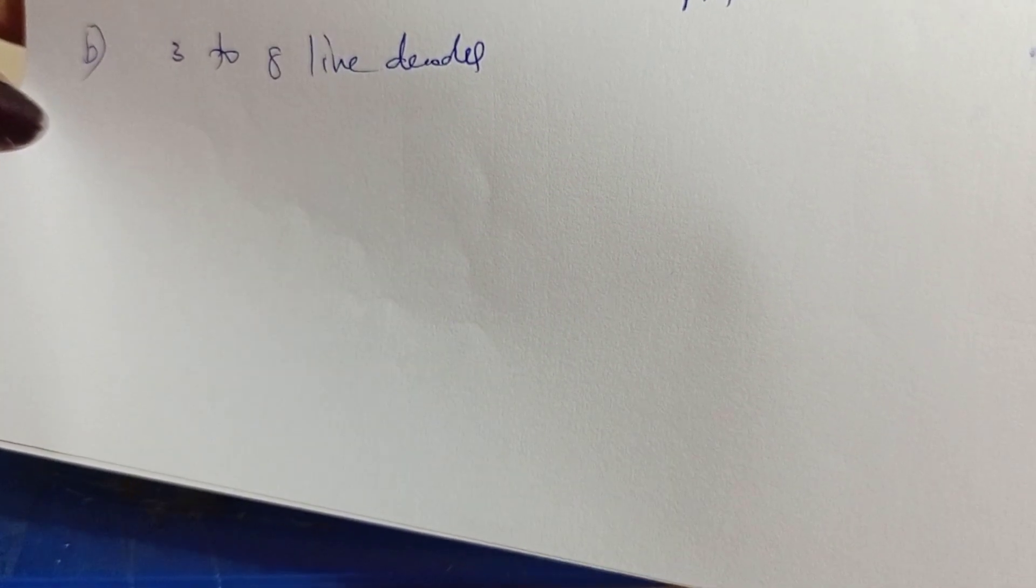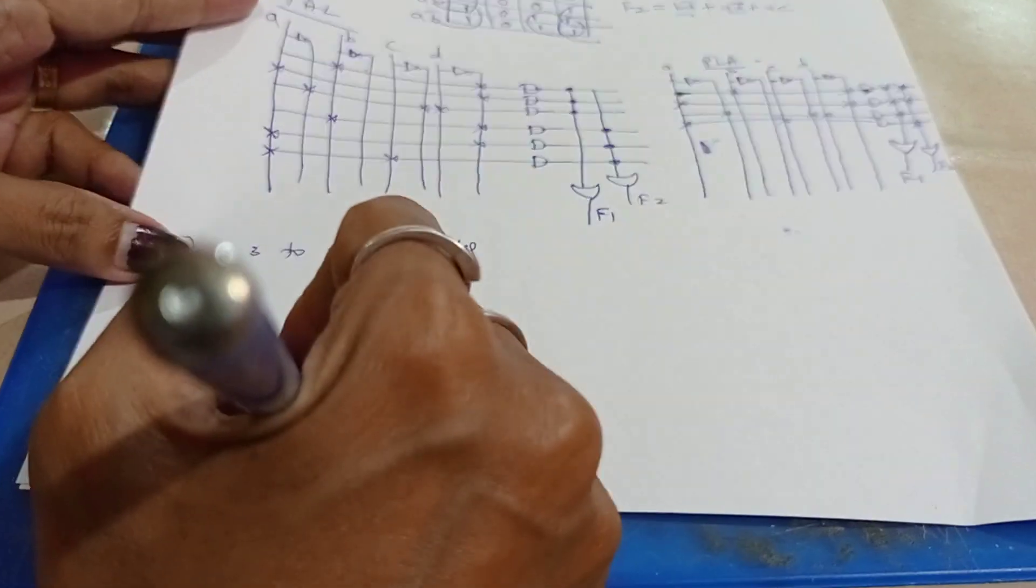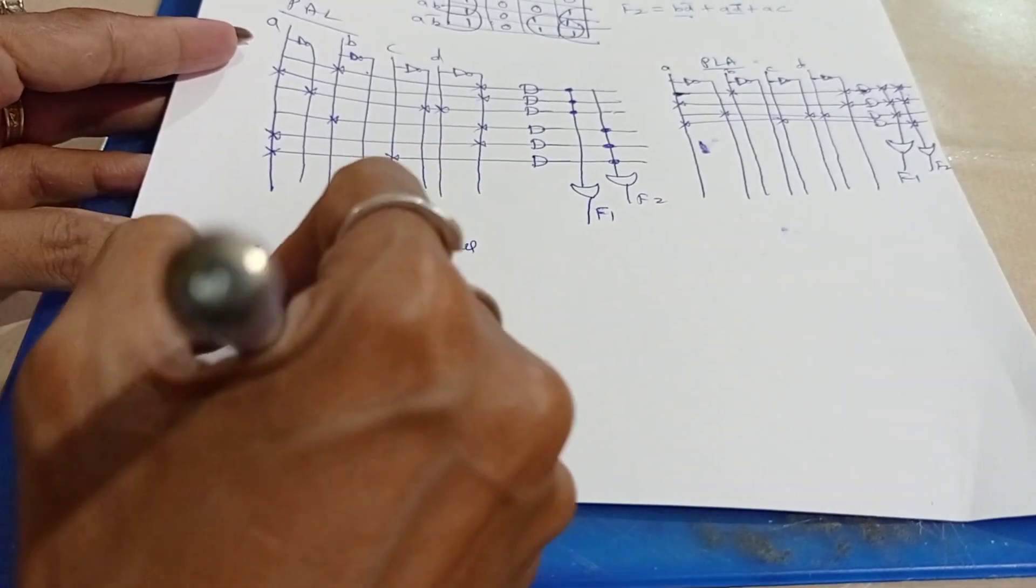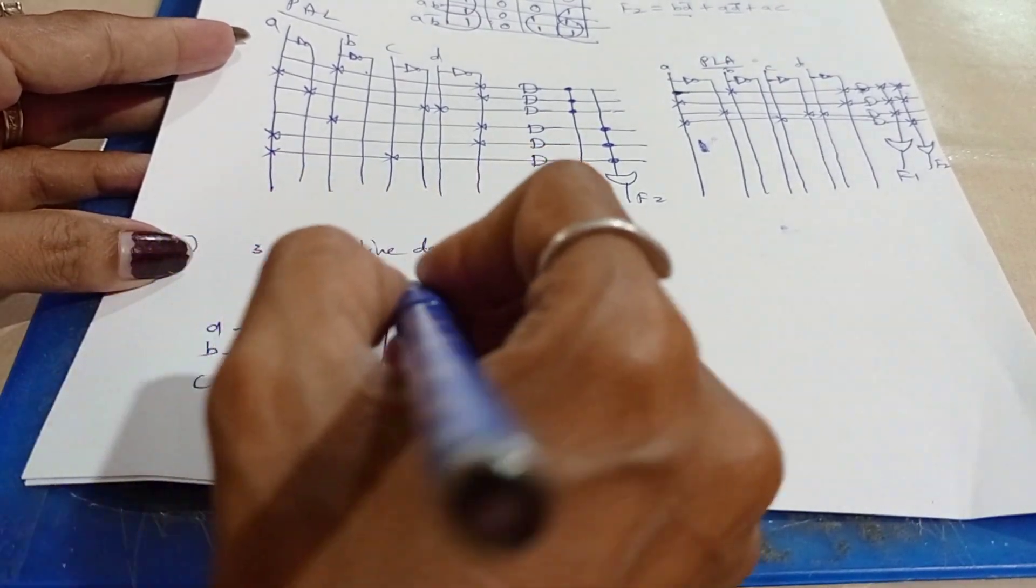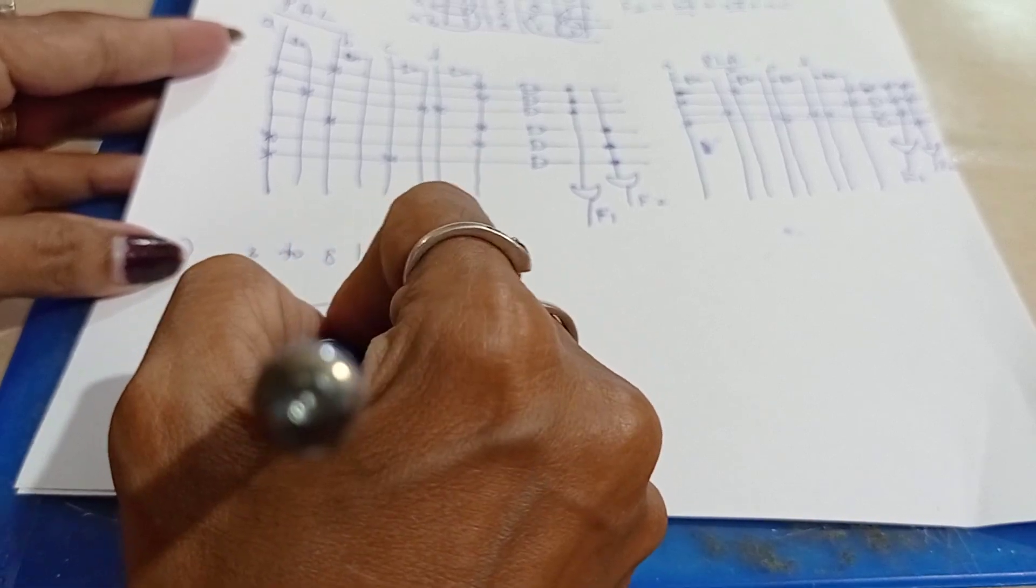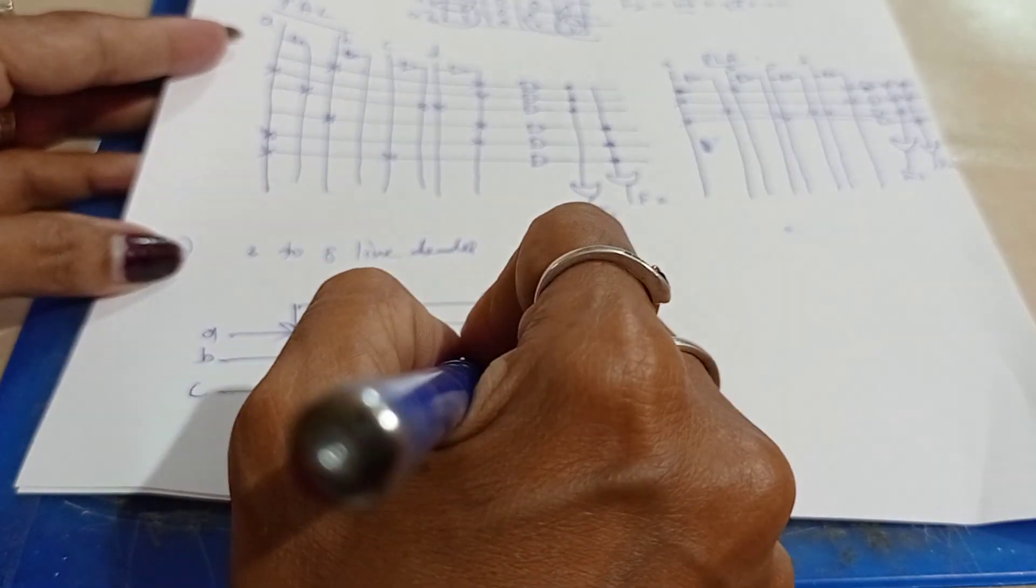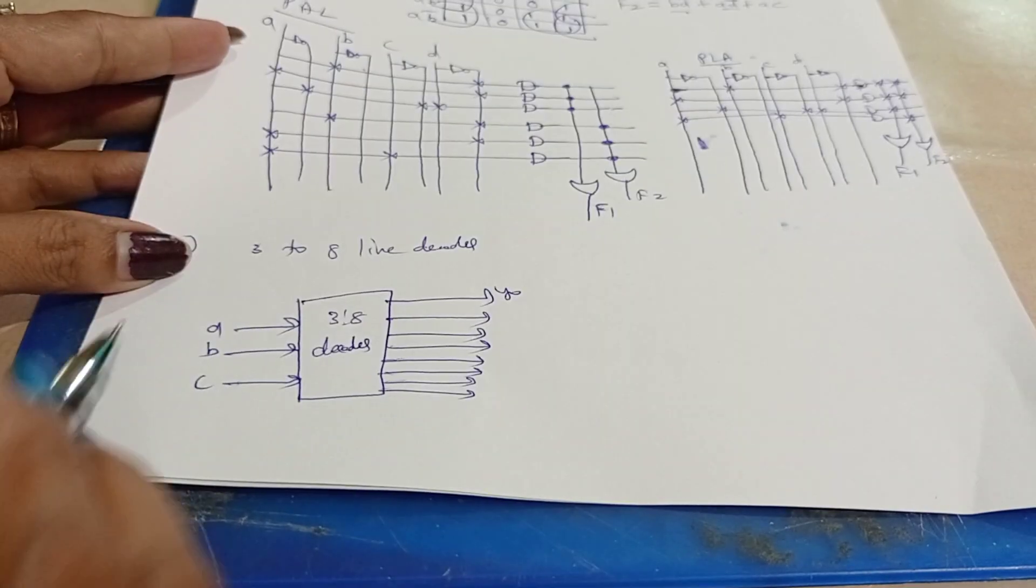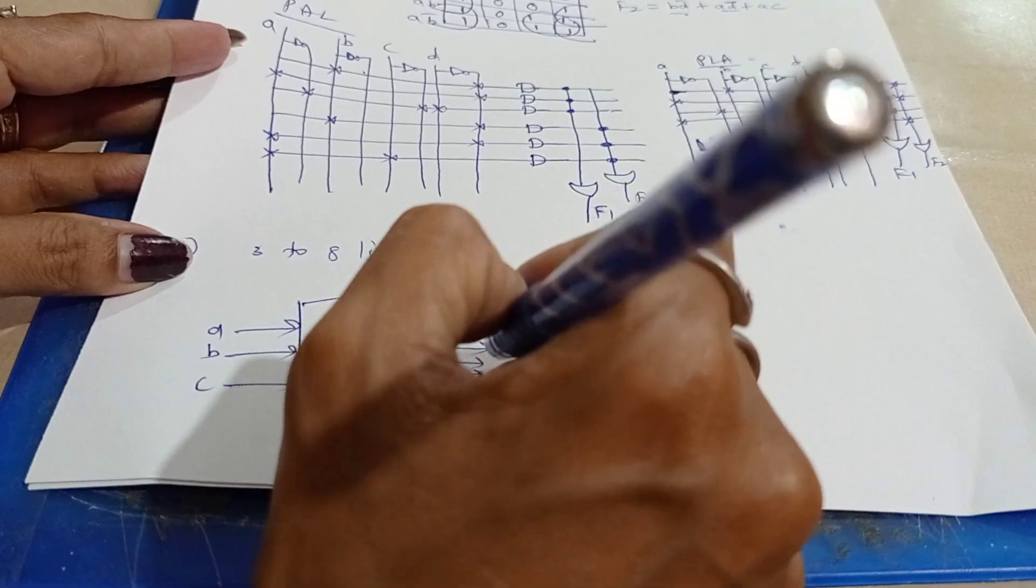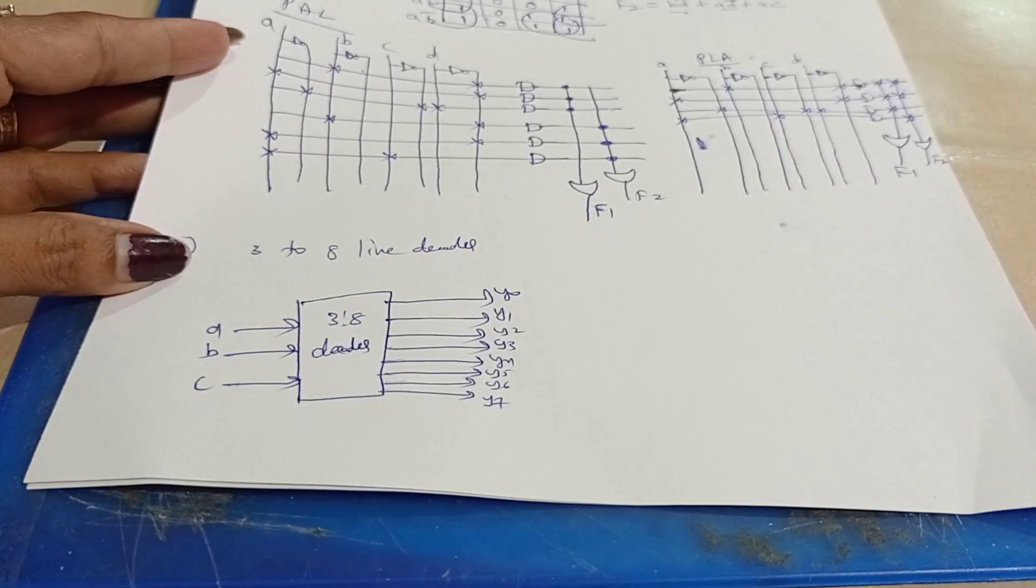Three to eight line decoder. That is three inputs: A, B, C, and eight outputs: Y0, Y1, Y2, Y3, Y4, Y5, Y6, Y7.